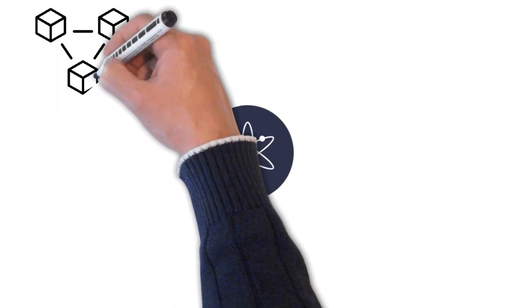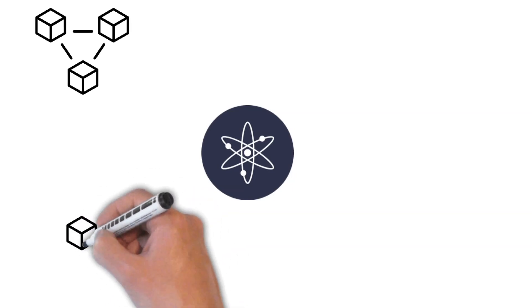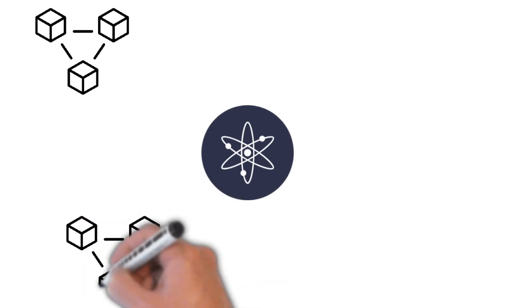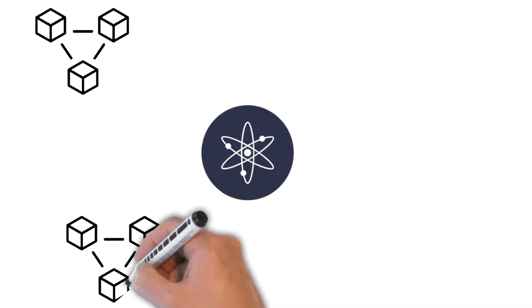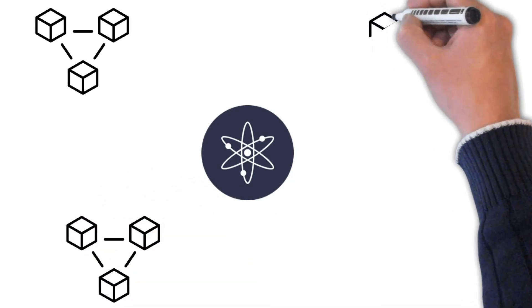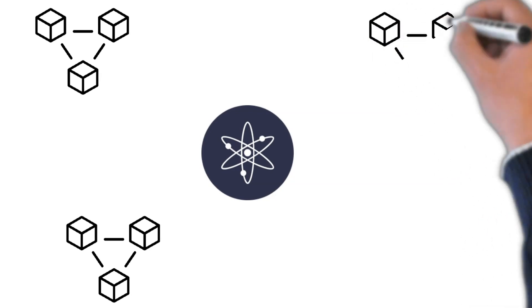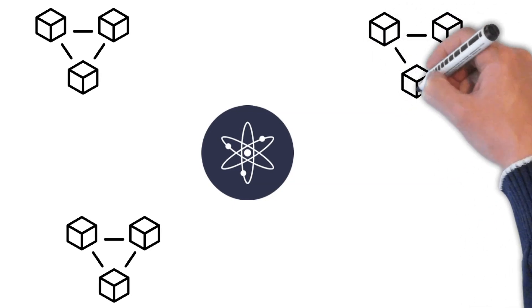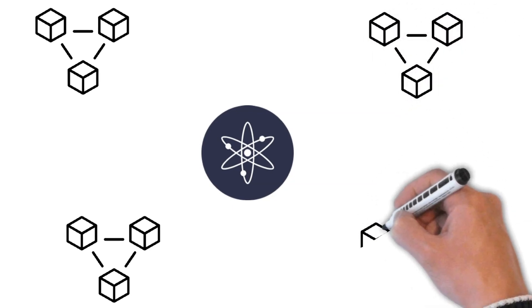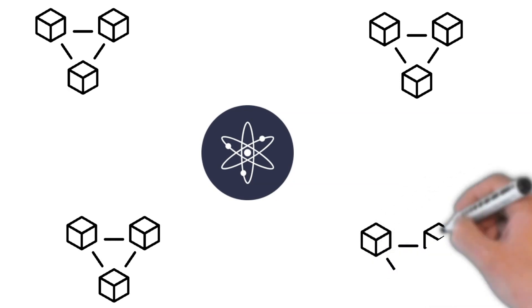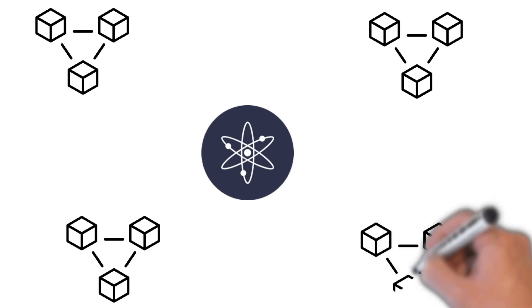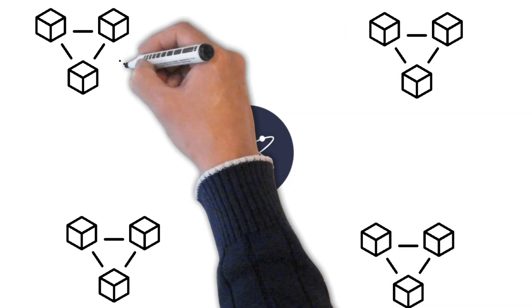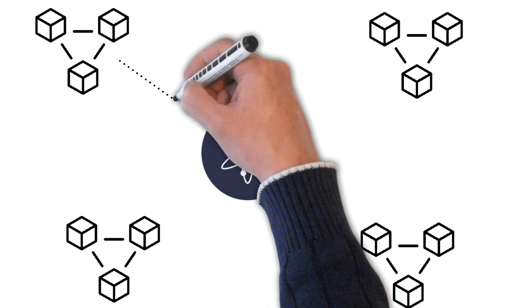We also have to talk about the Cosmos Hub. In the center of the Cosmos ecosystem is the Cosmos Hub, which was the first blockchain that enabled IBC. The native cryptocurrency of the Cosmos Hub is called Atom and is probably the best-known part of the Cosmos network. Atom is used as the base currency in Cosmos.